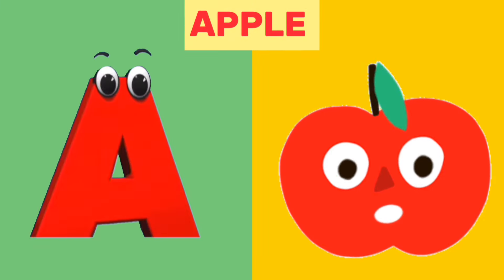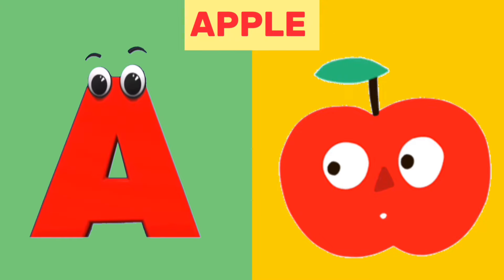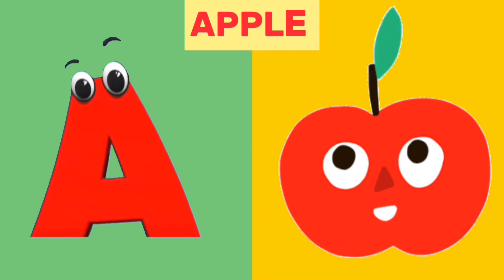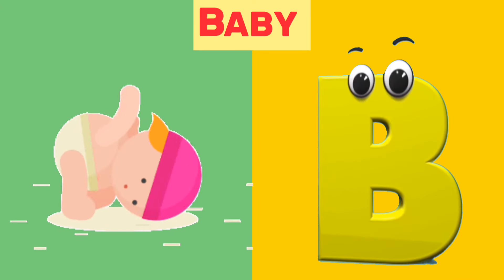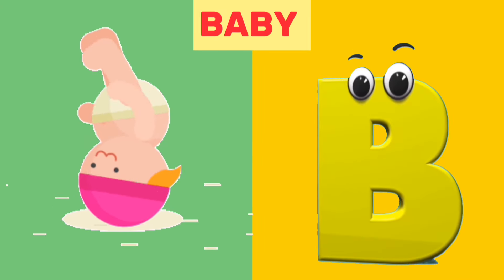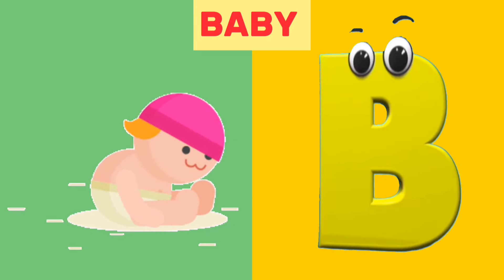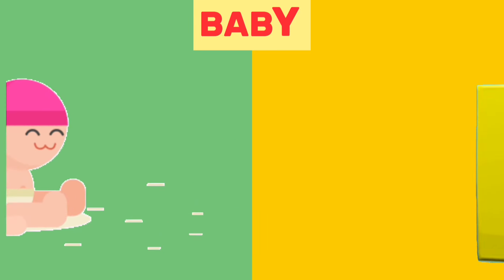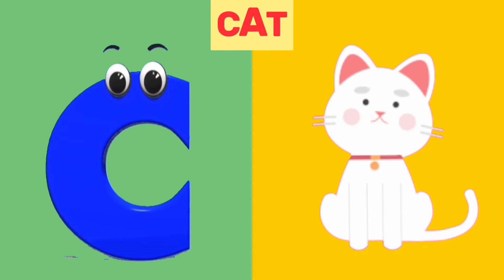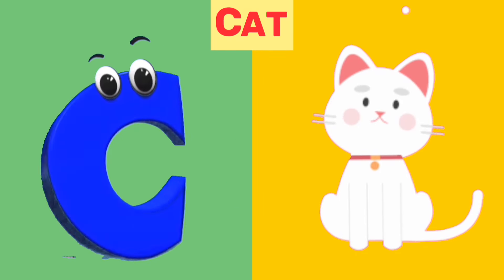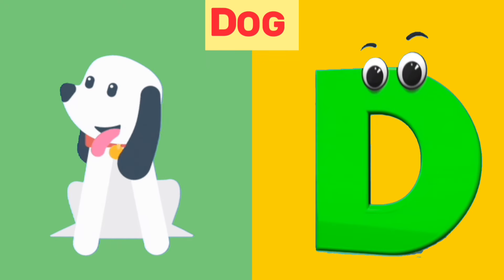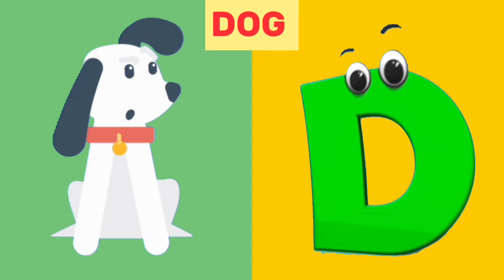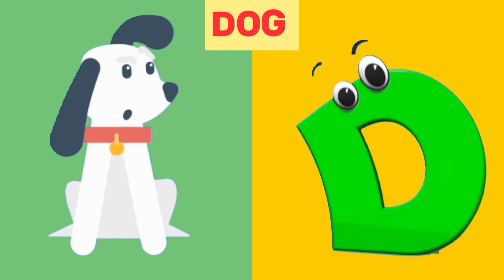A is for apple. A, a, apple. B is for baby. B, b, baby. C is for cat. C, c, cat. D is for dog. D, d, dog.